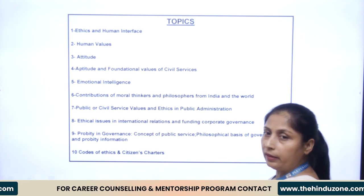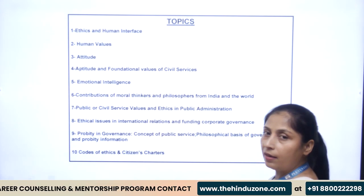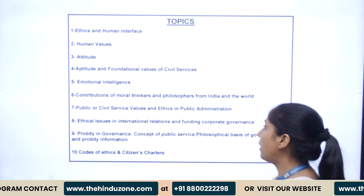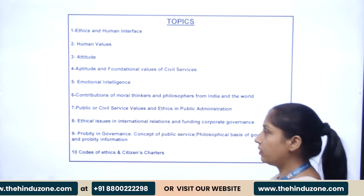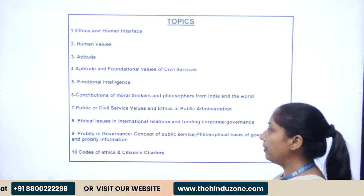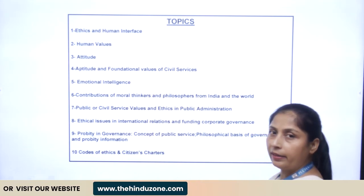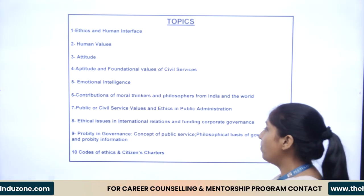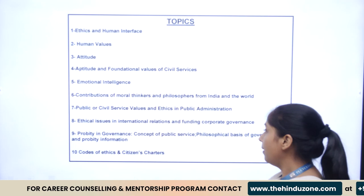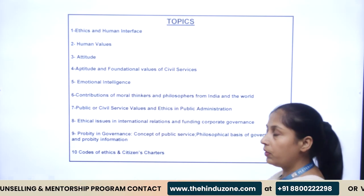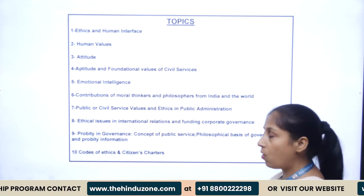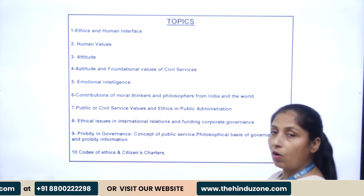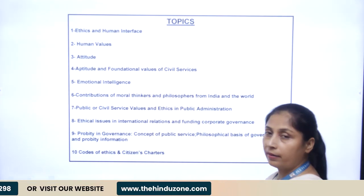Number six, contribution of moral thinkers and philosophers from India and the world. Number seven, public or civil service value and ethics in public administration. Number eight, ethical issues in international relations and funding corporate governance. Number nine, concept of public service, philosophical basis of governance and property information. Number ten is courts of ethics and citizen charters.